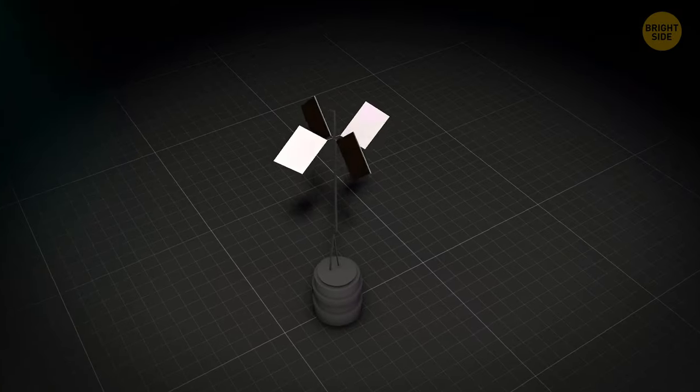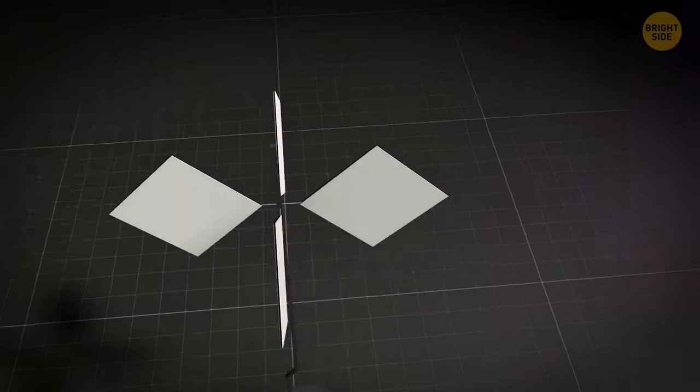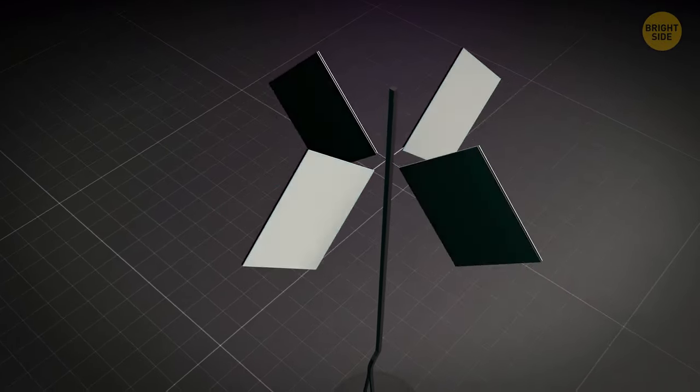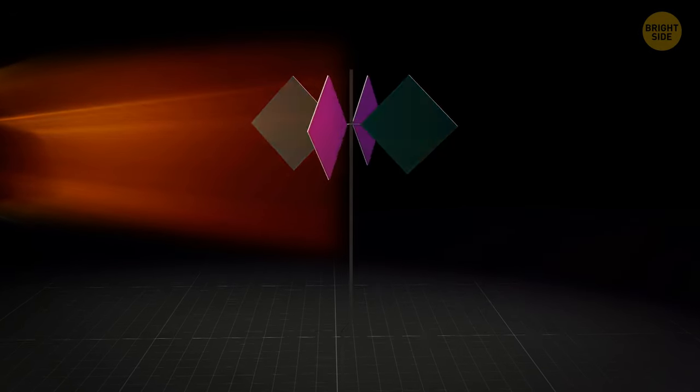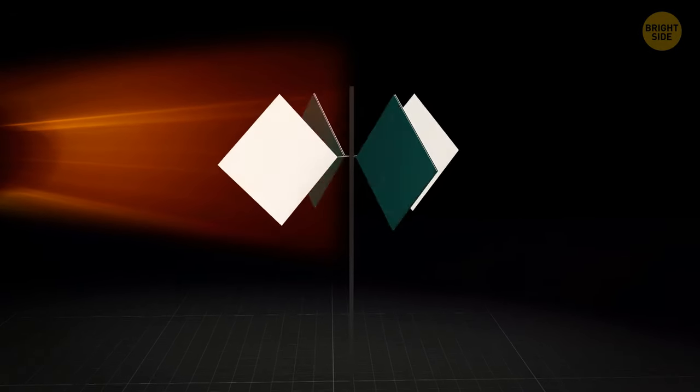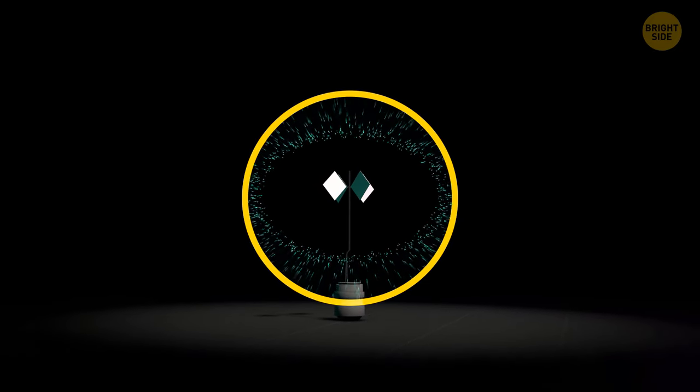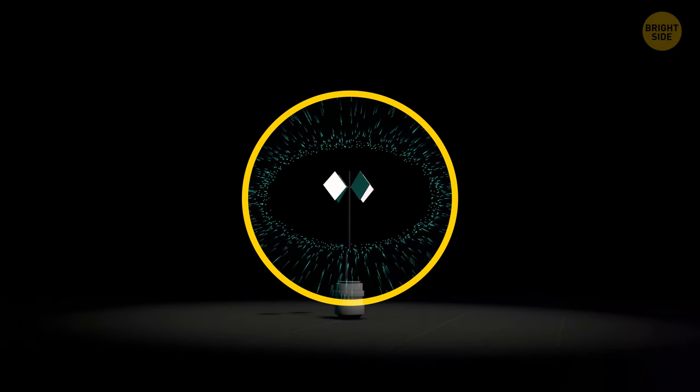One side of the veins was colored black and the other silver. The darker side absorbed more heat and created just enough momentum for the veins to start spinning. It's like the black side is trying to move away from sunlight. This only happens in a vacuum. If there was air inside, the veins couldn't move because of friction.